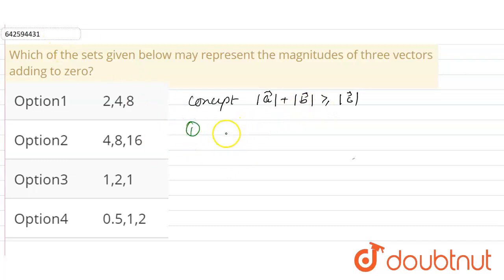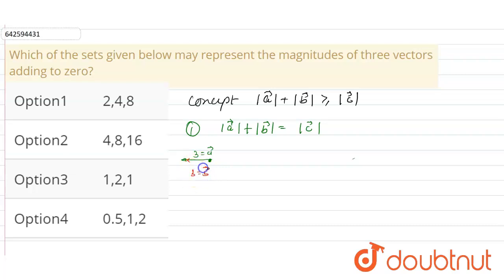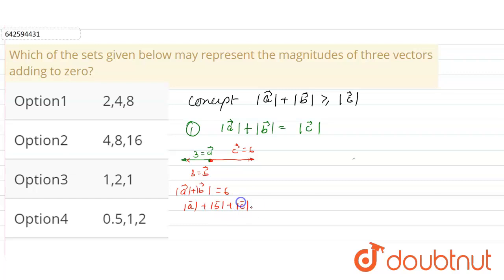Let us check the equality condition — when the sum of the magnitudes of two vectors equals the magnitude of the third vector. Suppose vector A and vector B each have magnitude three in the same direction, so their resultant is six. If vector C has magnitude six in the opposite direction, then A + B + C = 6 − 6 = zero. This satisfies the first condition.